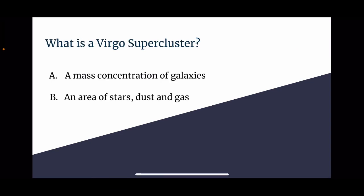What is a Virgo supercluster? A being a mass concentration of galaxies, B being an area of stars, dust, and gas. The correct answer would be A, a mass concentration of galaxies.